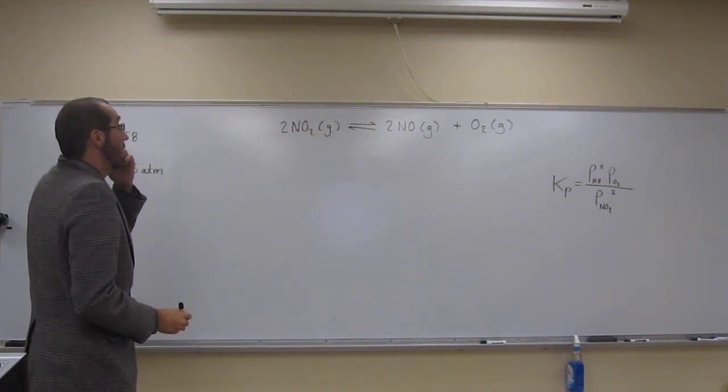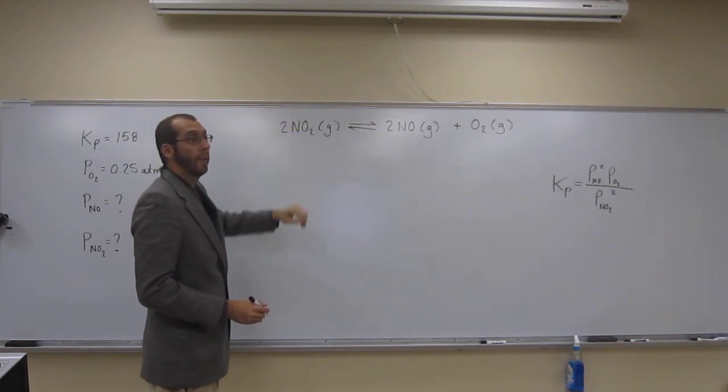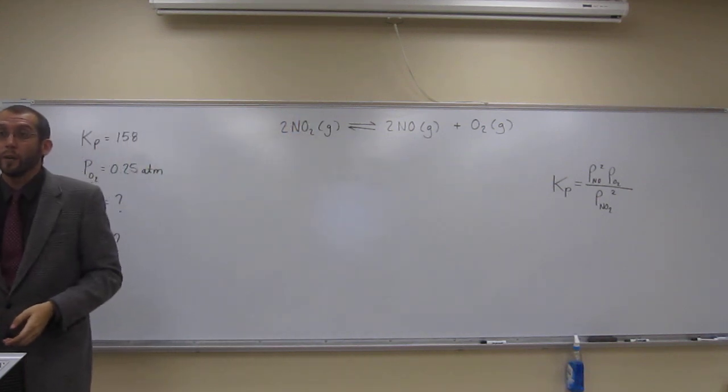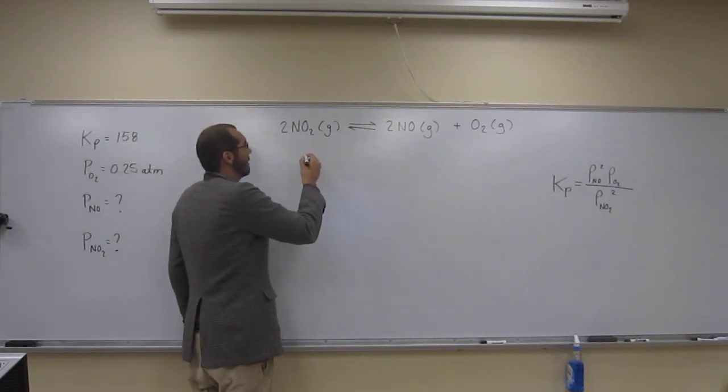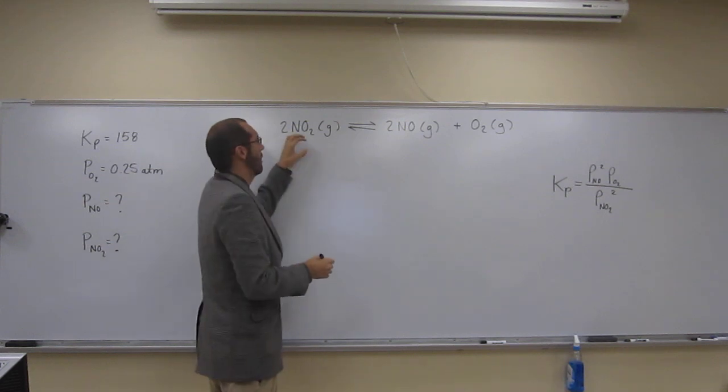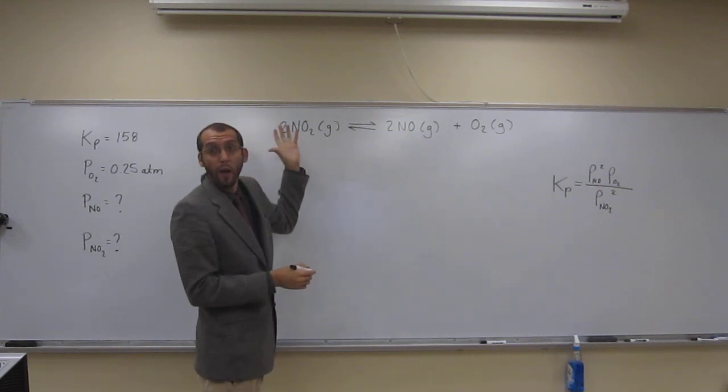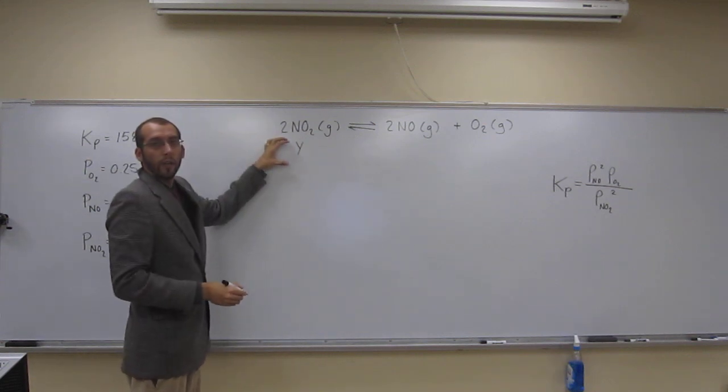So the other thing they told us is that we started with only nitrogen dioxide, but they didn't tell us the amount that we started with. So that is the big problem. But let's just say, since we like to use x for our ice tables, let's just say we started with some other variable like y. So some amount, some pressure.